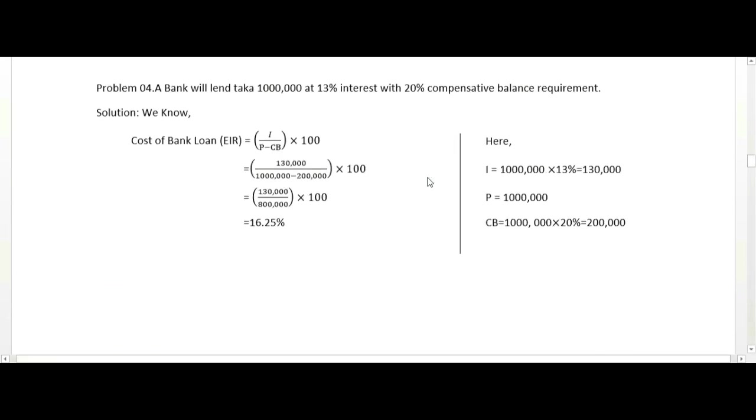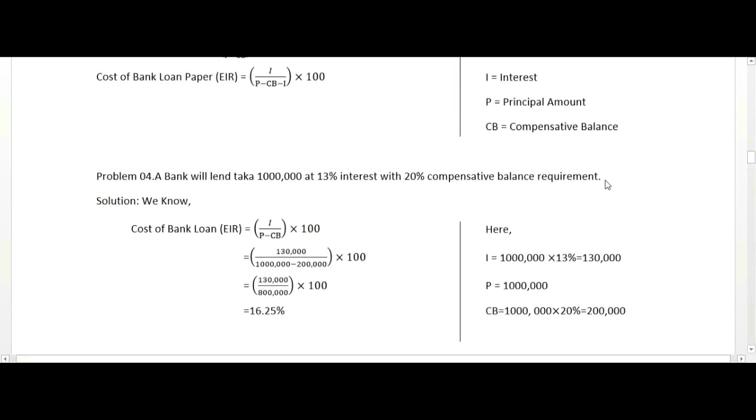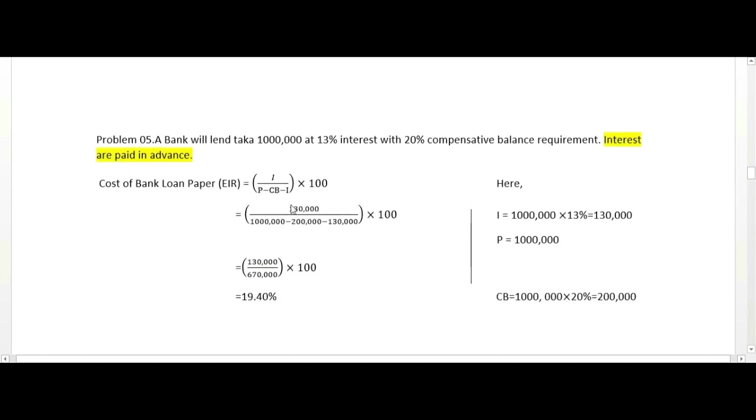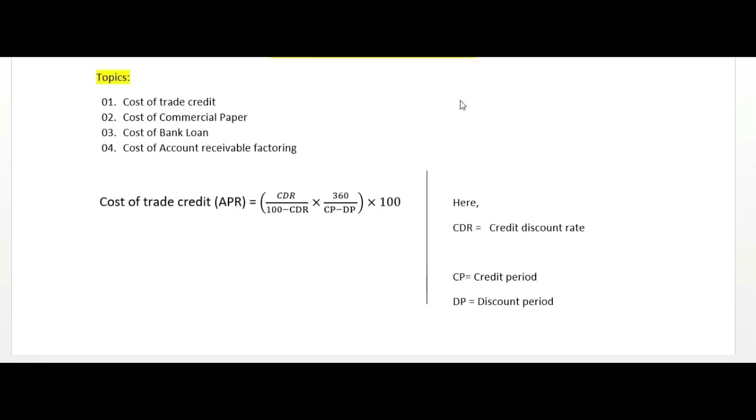For bank loans where interest is paid in advance or deducted in advance, the formula uses minus I in the denominator. This concept should now be clear.